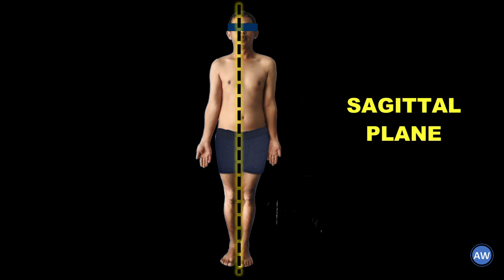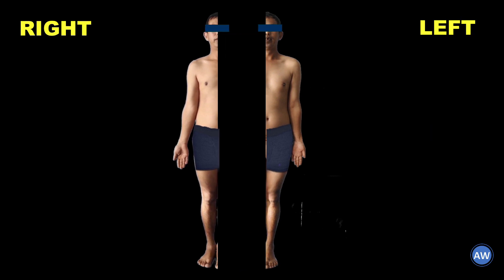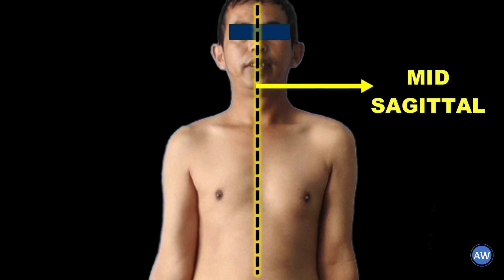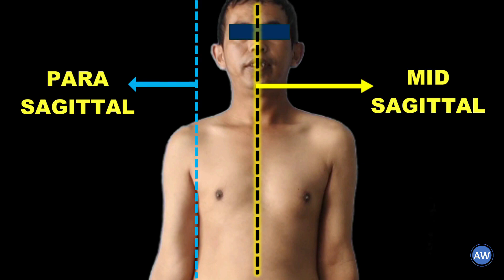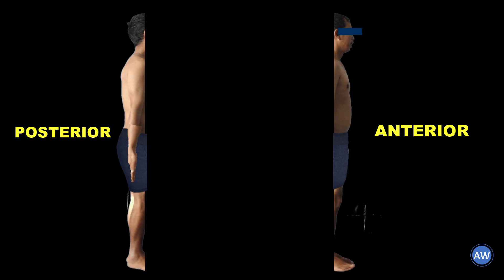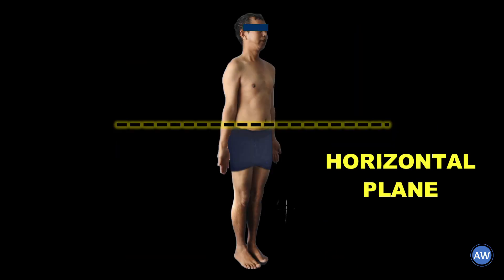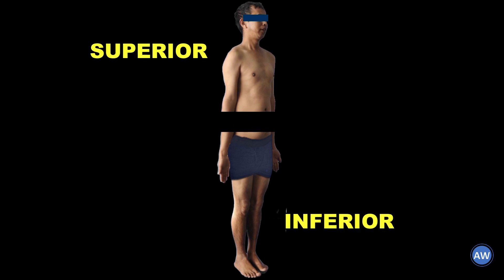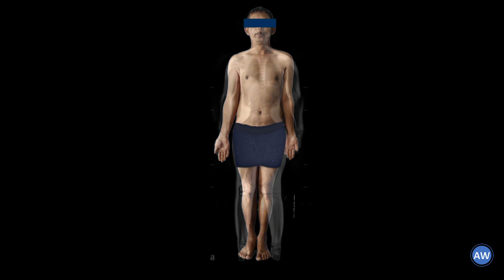For discussing the planes or axes, let us again see the anatomical position. A sagittal plane is a longitudinal plane which divides the body into two halves — a right and a left half. Moreover, a sagittal section can be a midsagittal or a parasagittal section. A coronal plane is a longitudinal plane which divides the body into two halves — an anterior and a posterior half. A horizontal plane, or an axial plane, or a cross section, is a plane which divides the body into a superior and an inferior half.